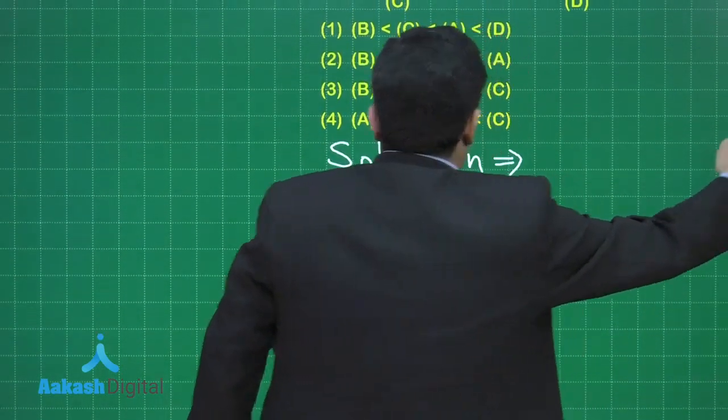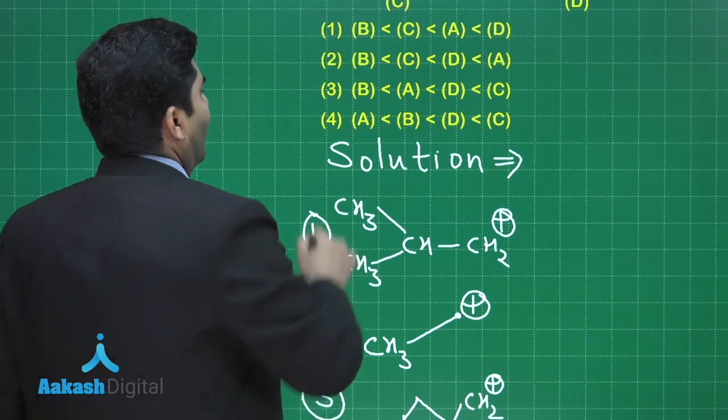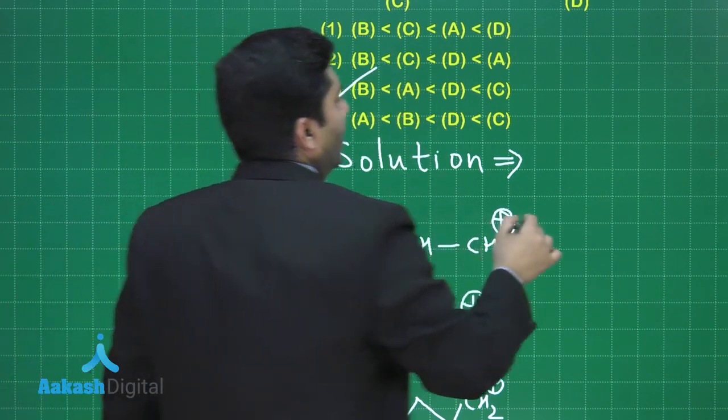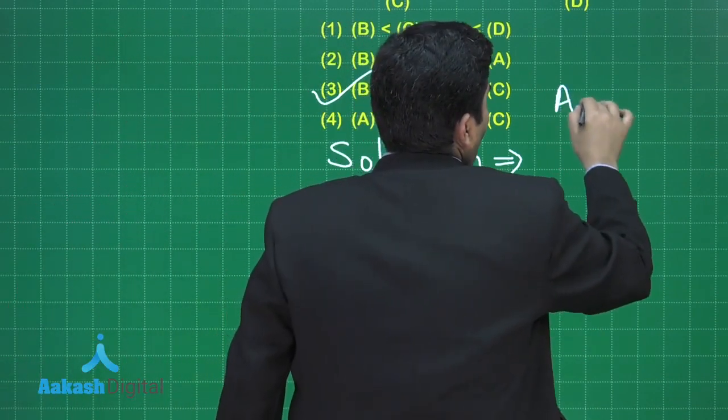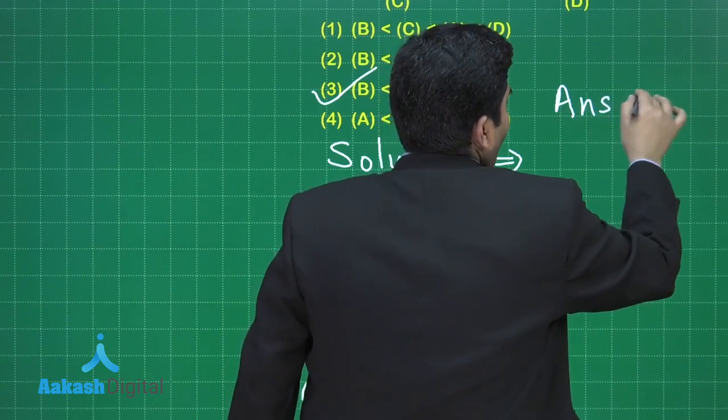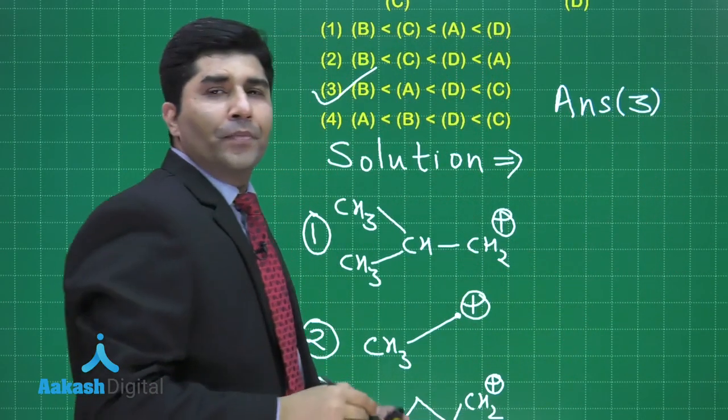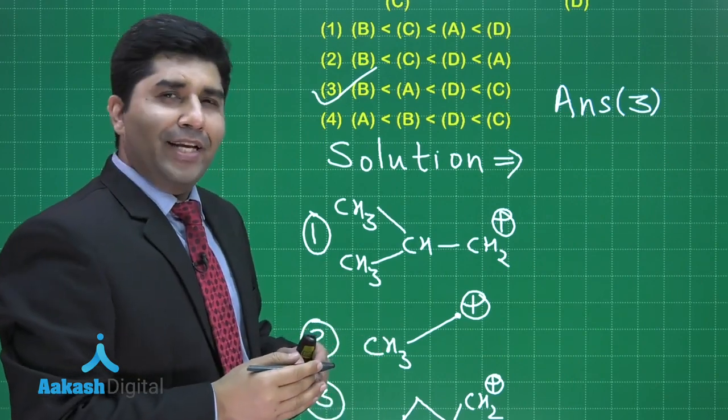And if we compare these four carbocations, our answer will be the third one. So the final answer is option number 3. Let us move on to the next question.